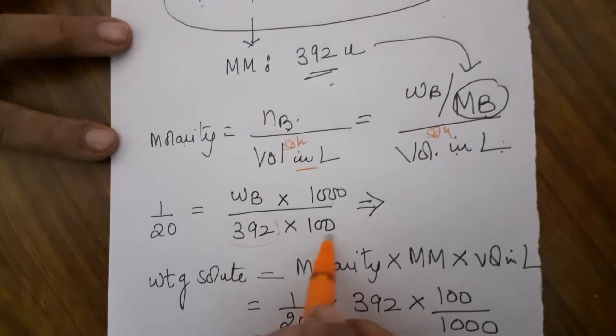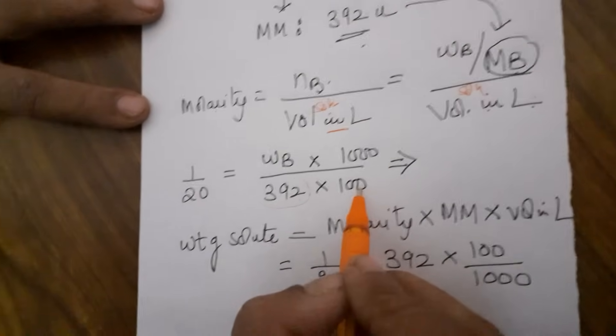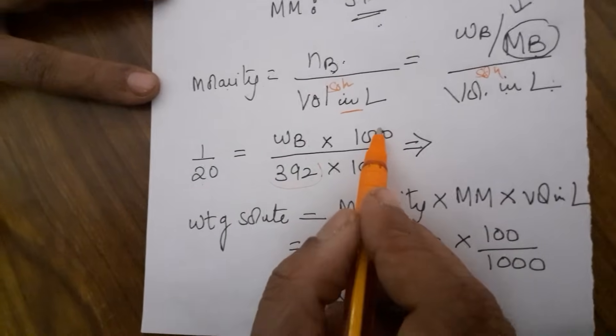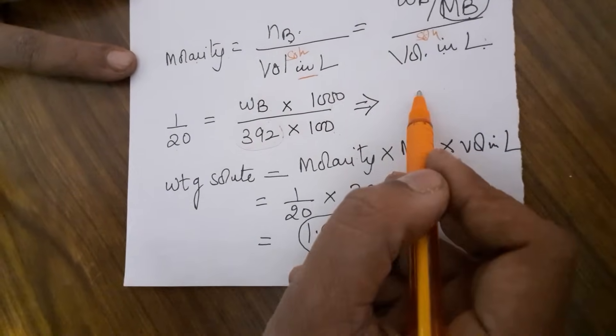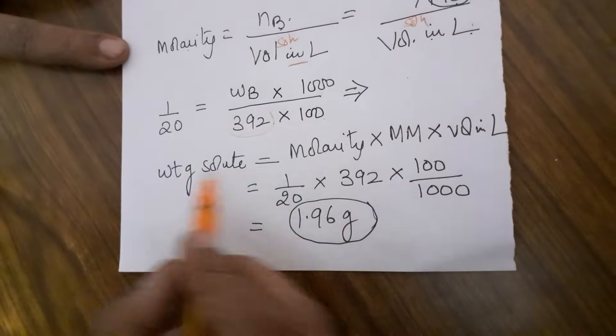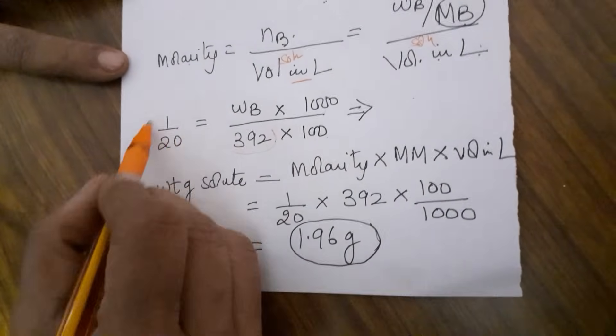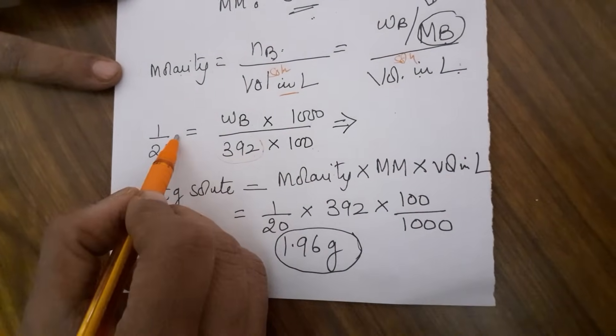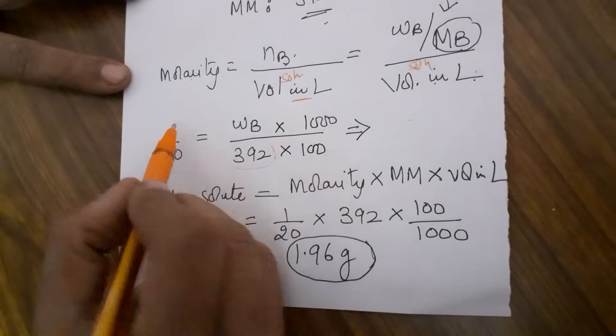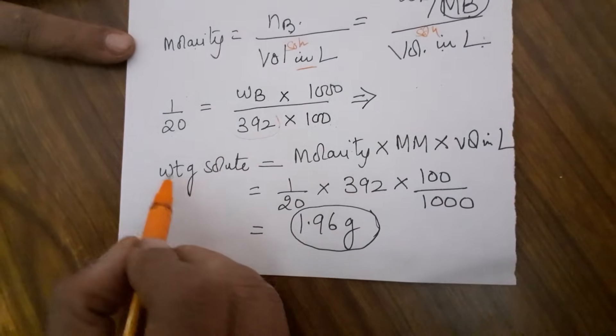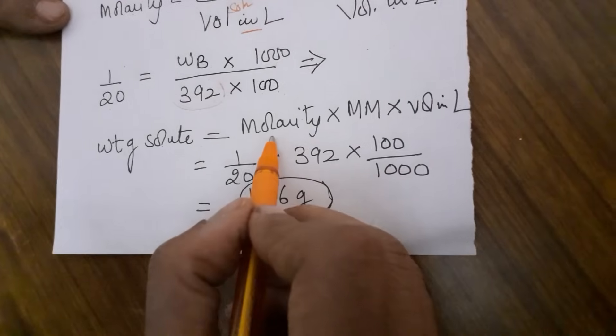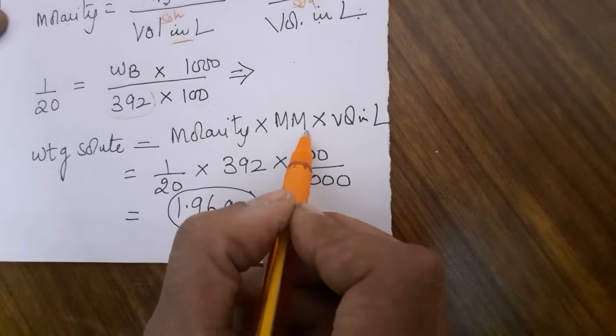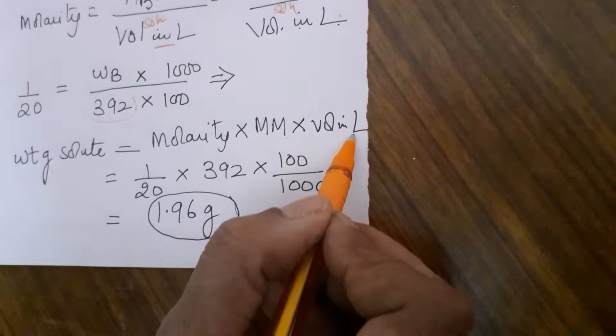Volume of the solution is only 100 ml, that is what we are preparing, but you have to take it in liters. So divide by 1000. The formula can also be: weight of the solute equals the molarity which is given to you into molecular mass, multiplied by volume in liters.